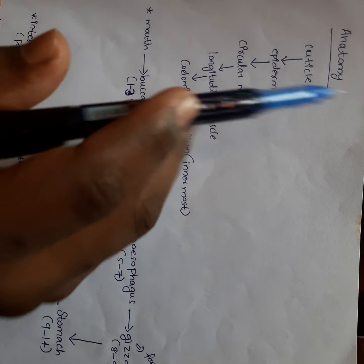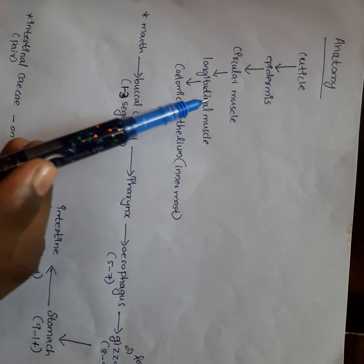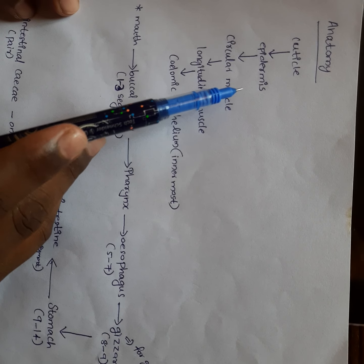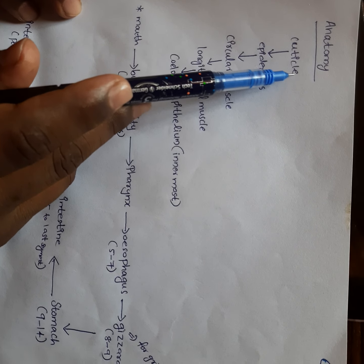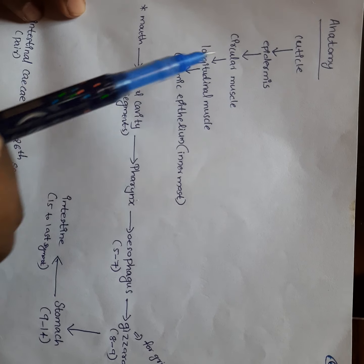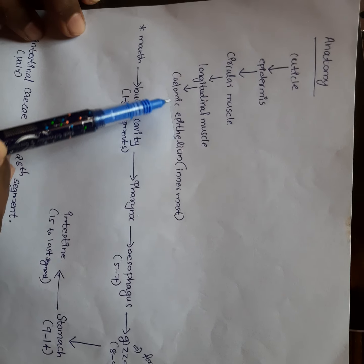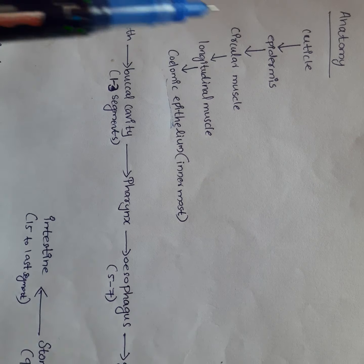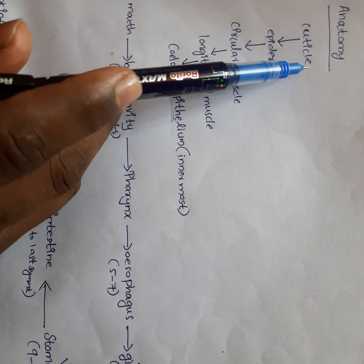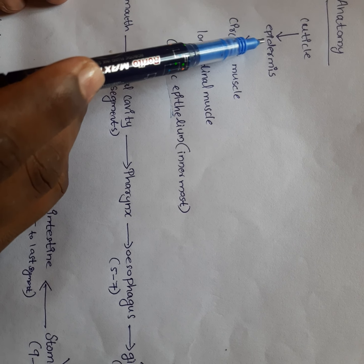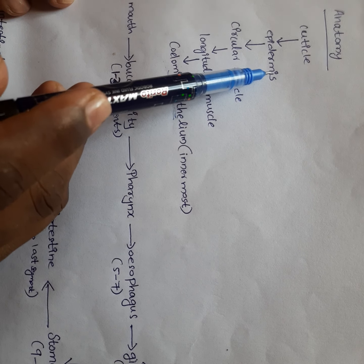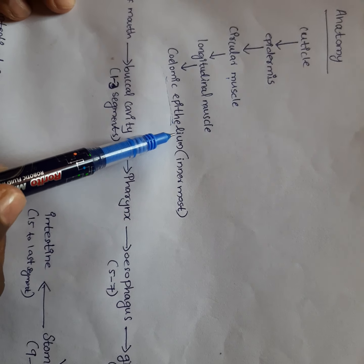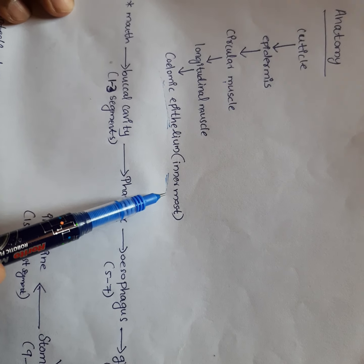Next, I am taking the anatomy of earthworm — specifically the layers around the body. The outermost layer is the cuticle. Inner to that is the epidermis, then circular muscle, longitudinal muscle, and finally the coelomic epithelium, which is the innermost layer.